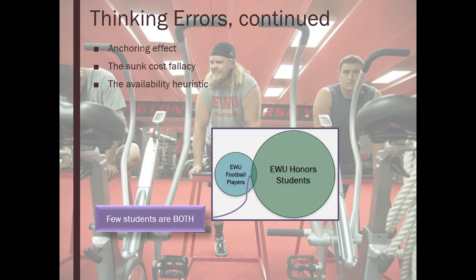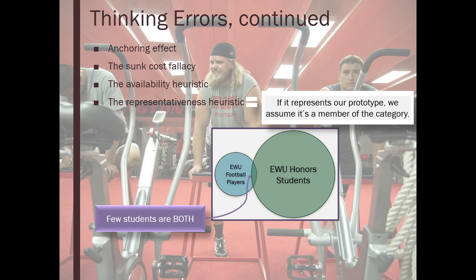So why, when we look at this picture, do we say 'well, they could be honor students too, but they definitely are football players, so I'll say honor students who are football players'? Why are we willing to make that mistake? Because of the representativeness heuristic — the scenario so clearly represents our prototype for football player that we overlook the probability that they are the combination of two things.